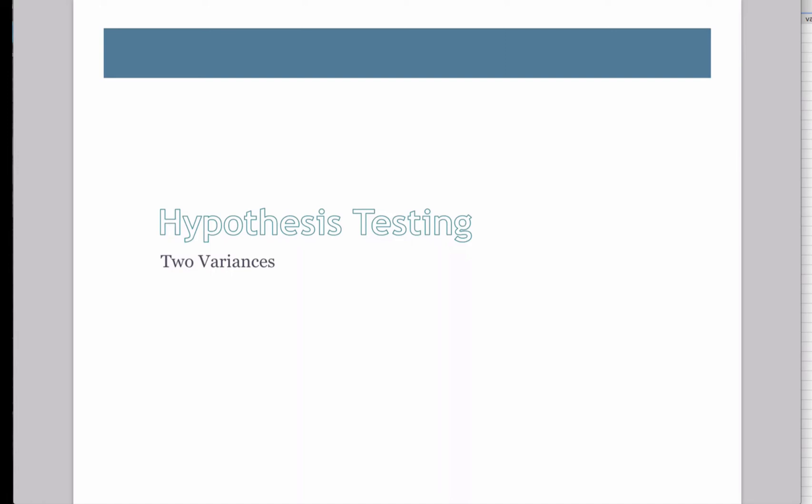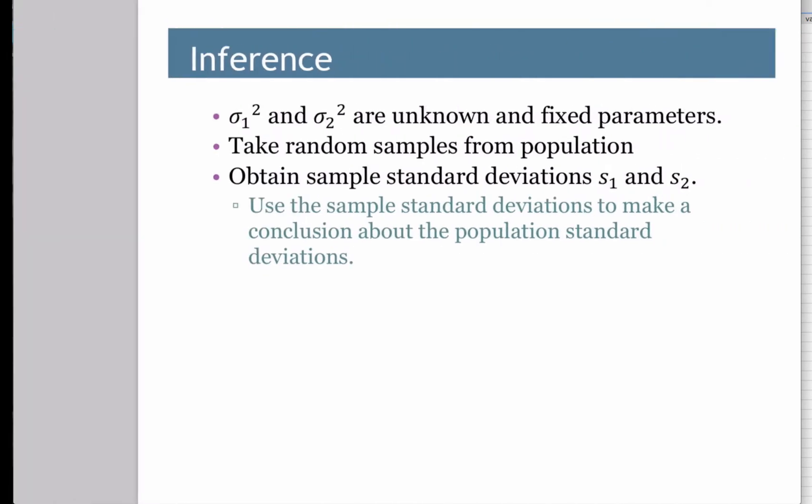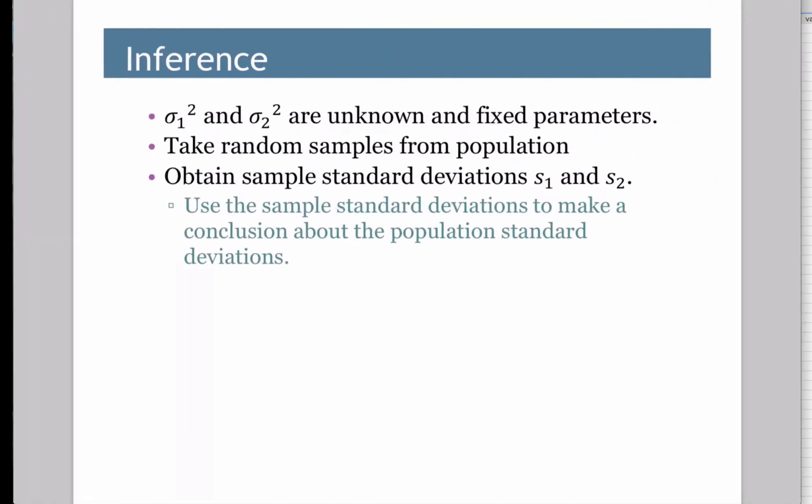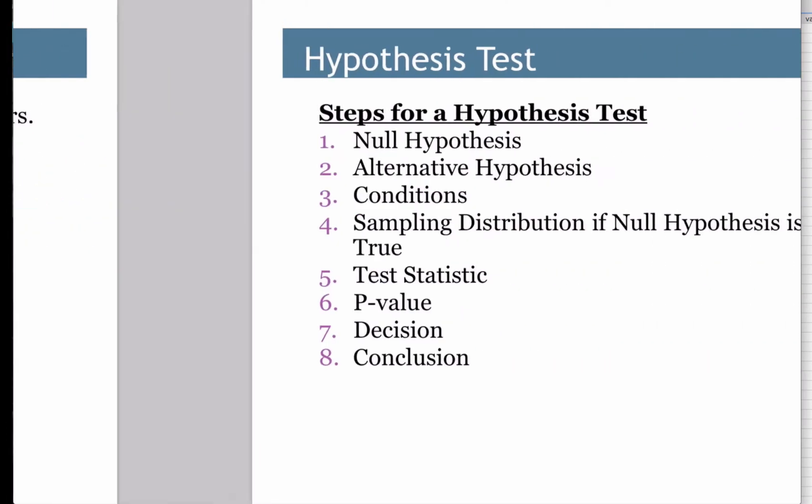Alright, let's go ahead and we're going to do hypothesis testing for two variances. So here we go. We're going to make an inference, an educated guess. Sigma one squared, sigma two squared. We've got two groups here and we don't know the variances for these two groups. We'd like to try to make an educated guess about what's going on with them. So we'll take a sample, of course, we'll look at S1 and S2 which are the standard deviations or S1 squared and S2 squared, the sample variances.